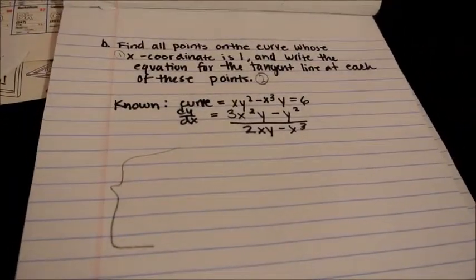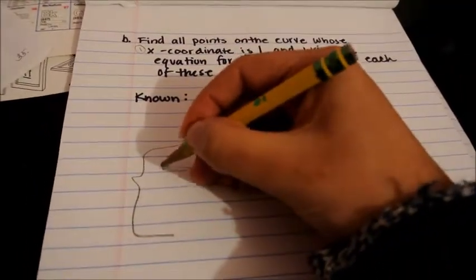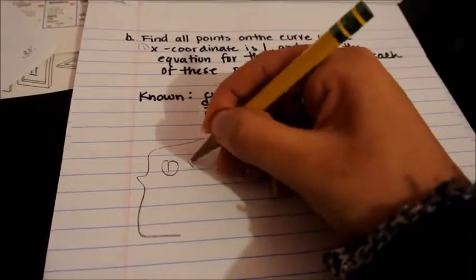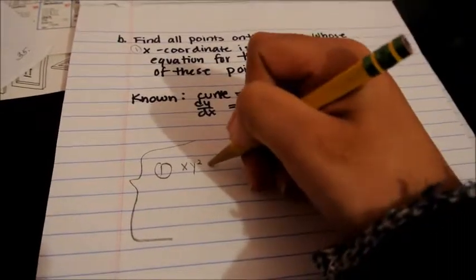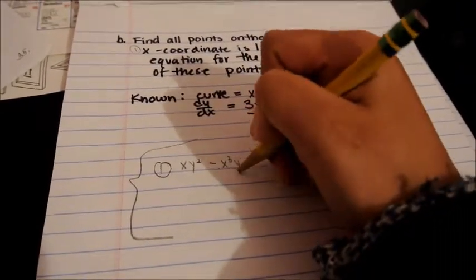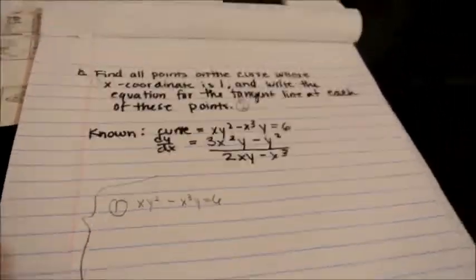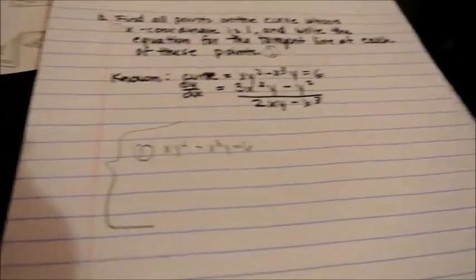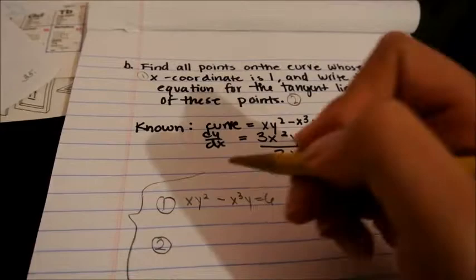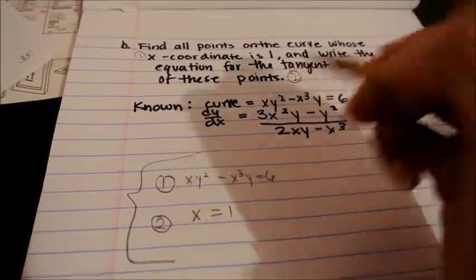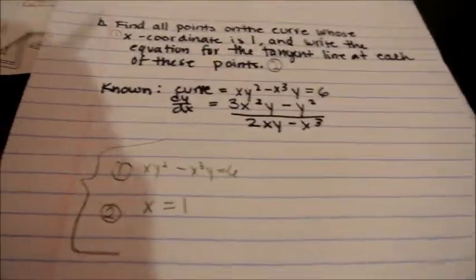We need two things. We need the curve, which is known, which is xy-squared minus x cubed y equals 6. What I mean by known is that it's already given in the question. And the second part is whose x-coordinate is 1. Now, we can solve this like a system of equations.